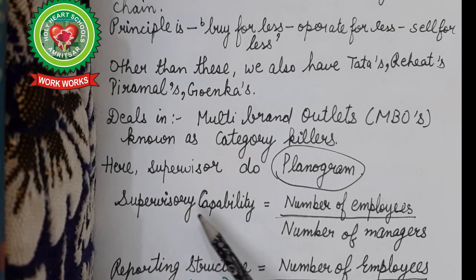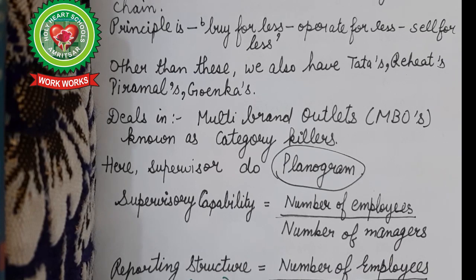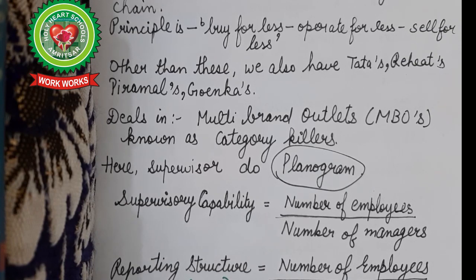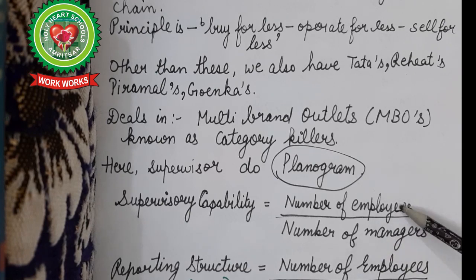How is a supervisor's ability judged? By the number of employees over the number of managers — that is, how many workers a supervisor can control effectively. For example, I can manage a class of 40 students properly, but if it doubles to 80, I may not manage it — so my span of control is 40. Similarly, how many workers a manager can control easily and effectively is called span of control.